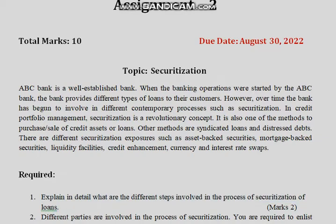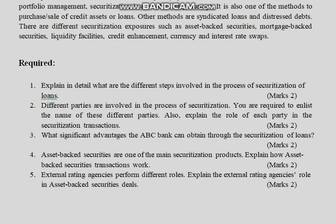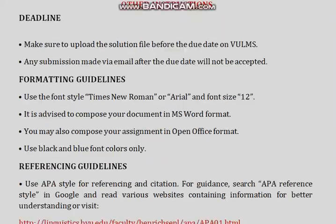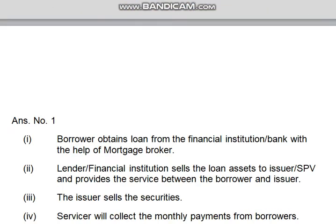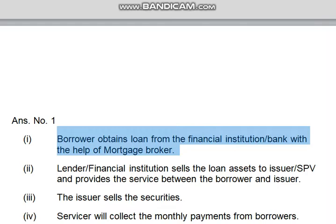So in this we have different steps to write. Step number 1 is: the borrower obtains a loan from a financial institution or bank, with the help of a mortgage broker. The borrower gets the loan from a financial institution, bank, or any NGO or bank.